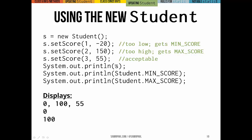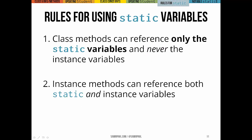If we print the student object, the toString method will print 0, 100, 55 — 0 being MIN_SCORE, 100 being MAX_SCORE, and 55 being the score that was within bounds. And if we print the class constants themselves — which are made public, so no getter is needed — we can do Student.MIN_SCORE and Student.MAX_SCORE.